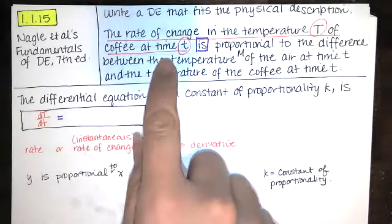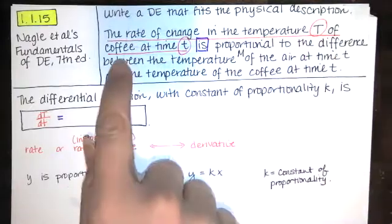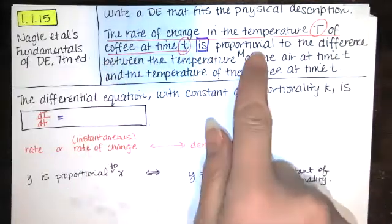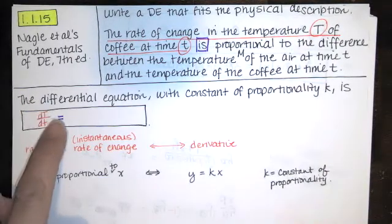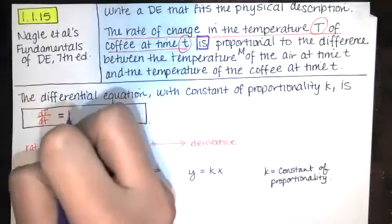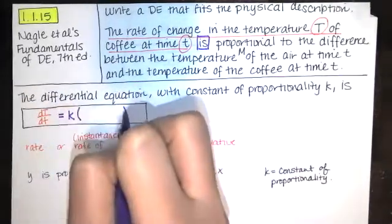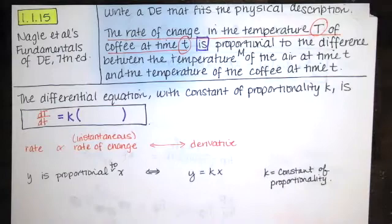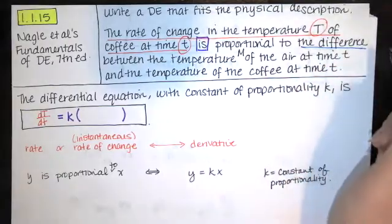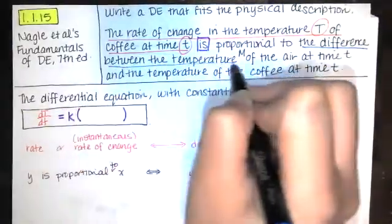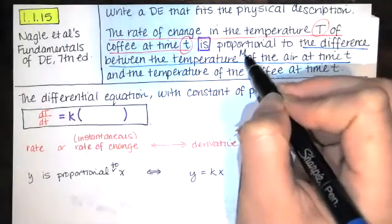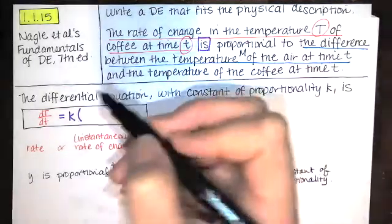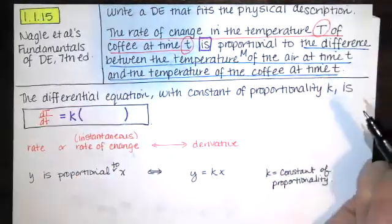So when they say the rate of change in the temperature T of coffee at time t is proportional to, that means it's equal to k times whatever they say next. And what is it proportional to? The difference. So we're going to subtract between the temperature of the air at time t, temperature M of the air at time t, and the temperature of the coffee at time t.